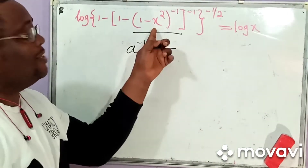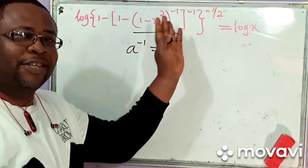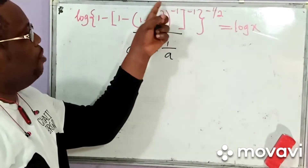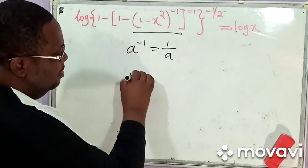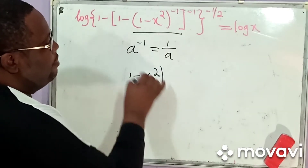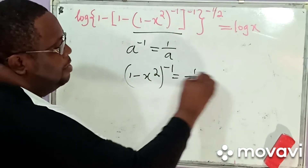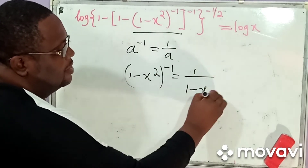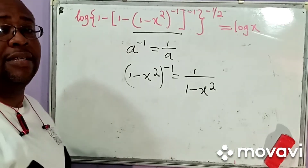Can I apply that to this? That is, 1 minus x squared to the minus 1 will simply be 1 all over the rule of this. In other words, 1 minus x squared raised to the power negative 1 would simply be equal to 1 all over 1 minus x squared. Correct?